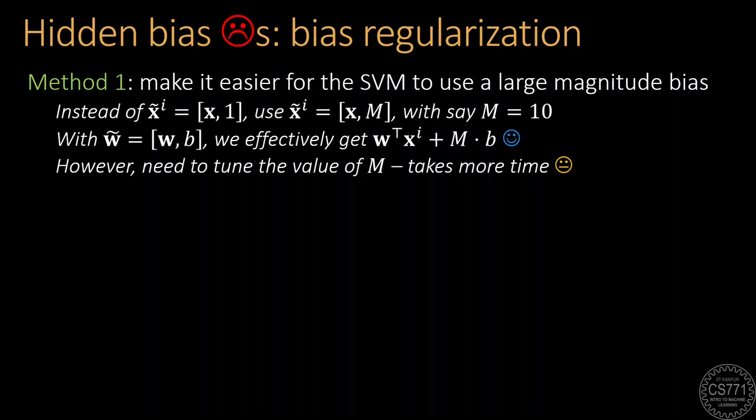This would act as a bias multiplier and let the effective bias take a large magnitude value without getting penalized. However, this multiplier constant needs to be tuned manually as a hyperparameter which takes more time and effort.